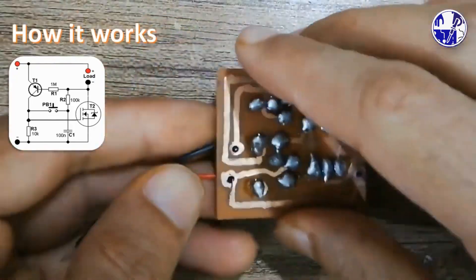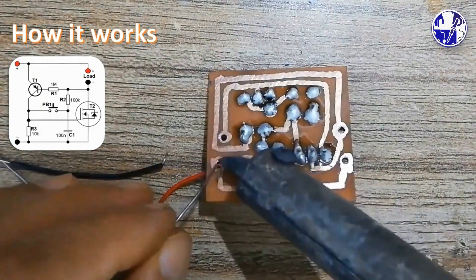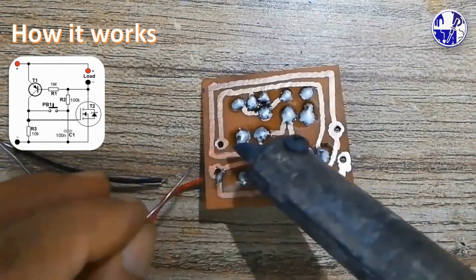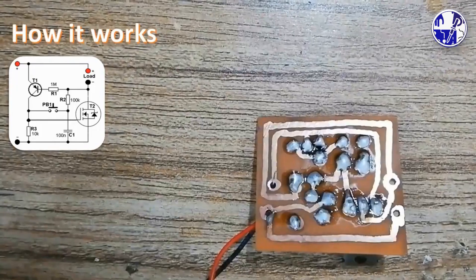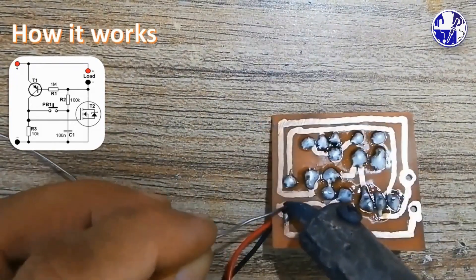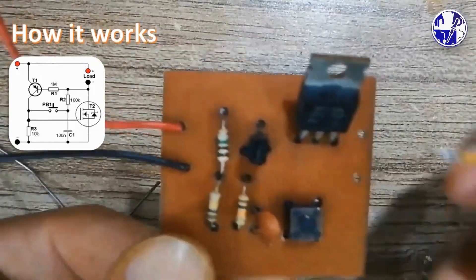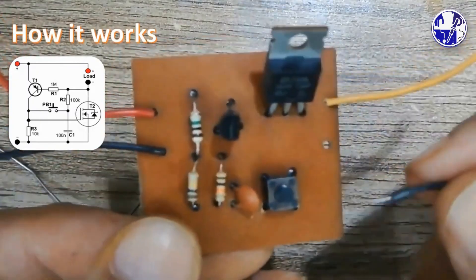The circuit operates based on a straightforward principle. In the off-state, capacitor C1 charges through the load and resistor R2. When the momentary button PB1 is pressed, the voltage stored in the capacitor connects to the base of transistor T2. This action opens transistor T2, turning on the load.